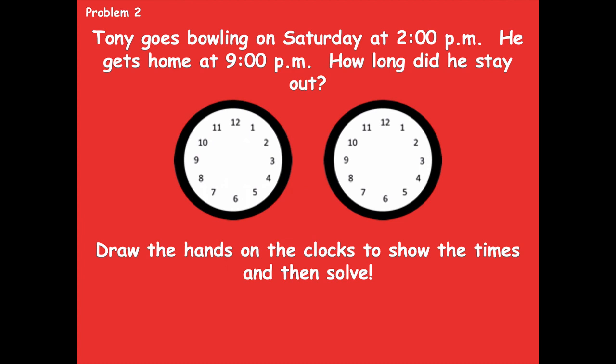Here is 2 p.m. when he left to go bowling, and here is 9 p.m. when he got home. He was gone for seven hours. We can solve that by counting around the clock starting at 2: 3, 4, 5, 6, 7, 8, 9 — putting up a finger each time gives you seven fingers, so seven hours. Or you could subtract 2 from 9 and get seven hours. I probably would have counted on from 2 o'clock — maybe you used a different strategy and that's okay.